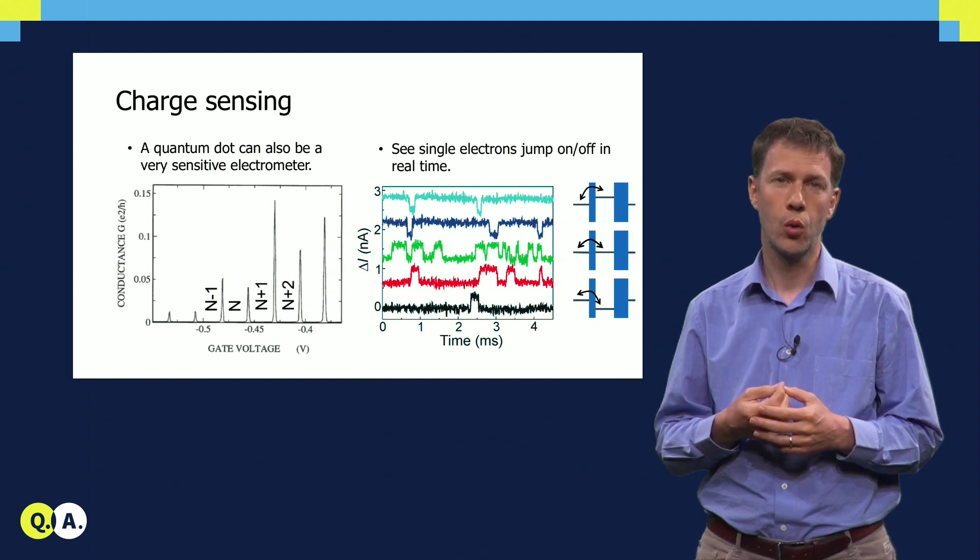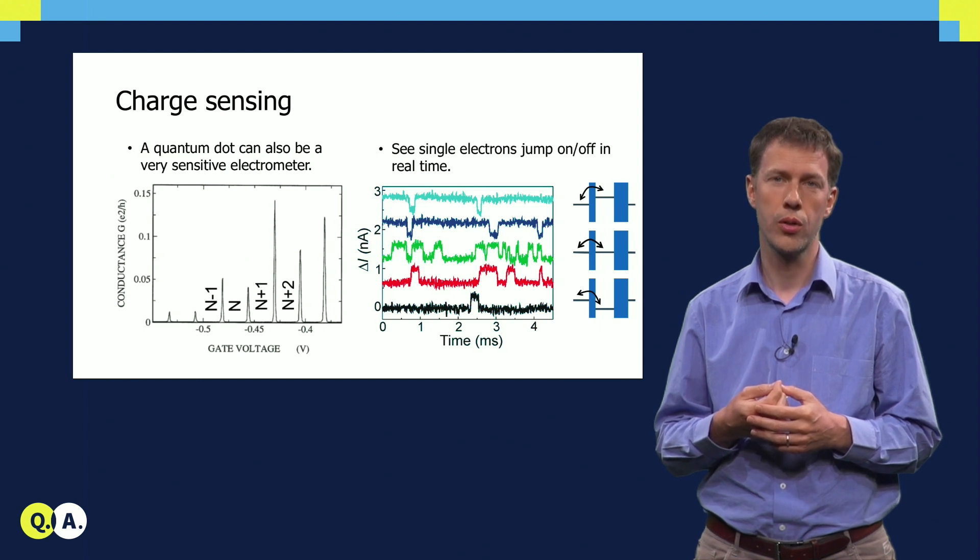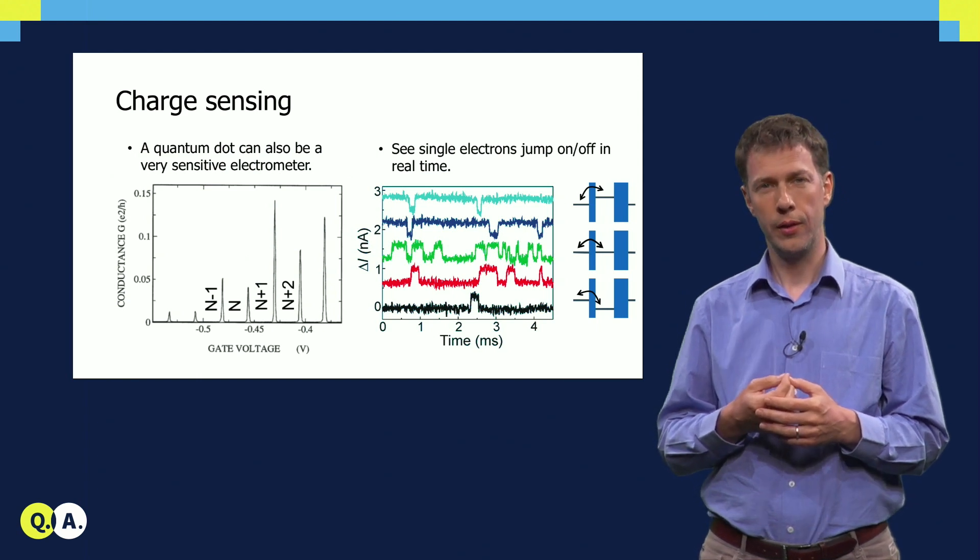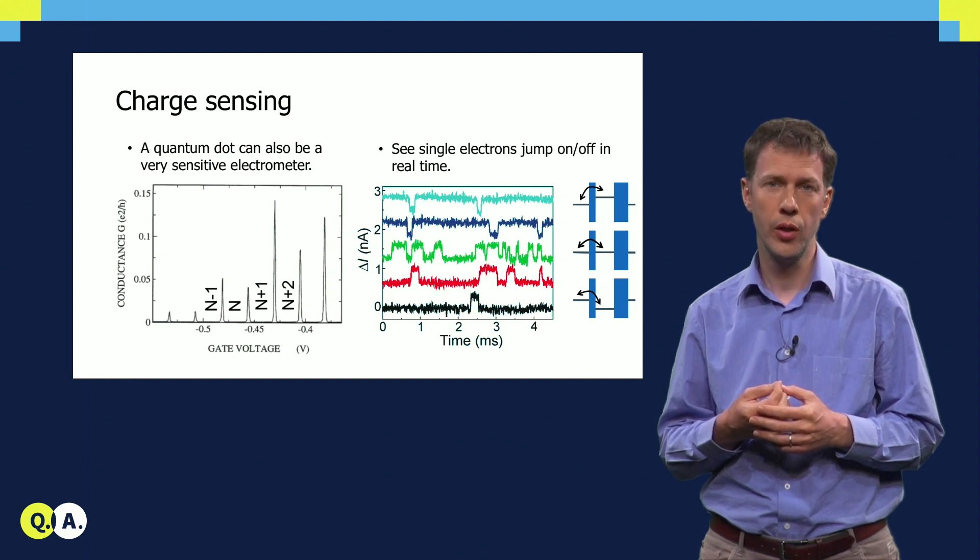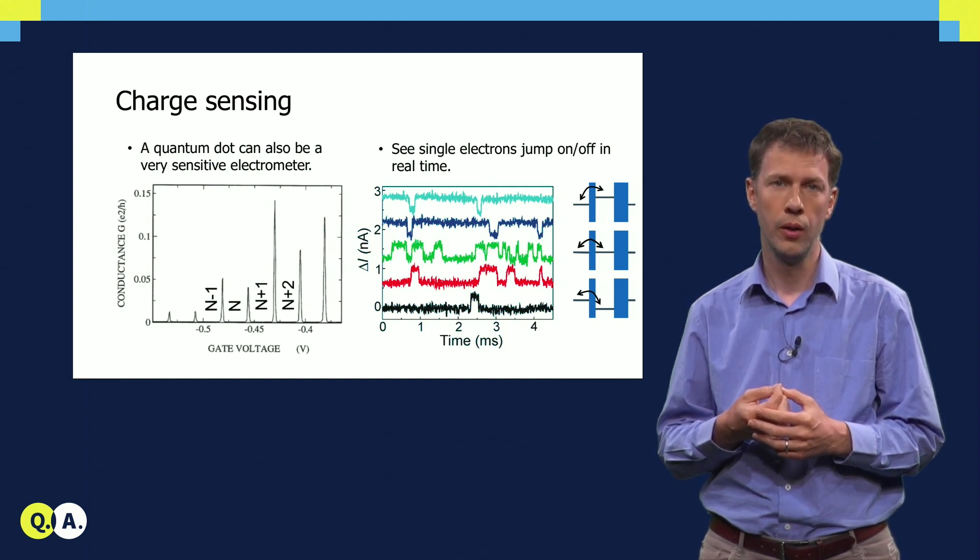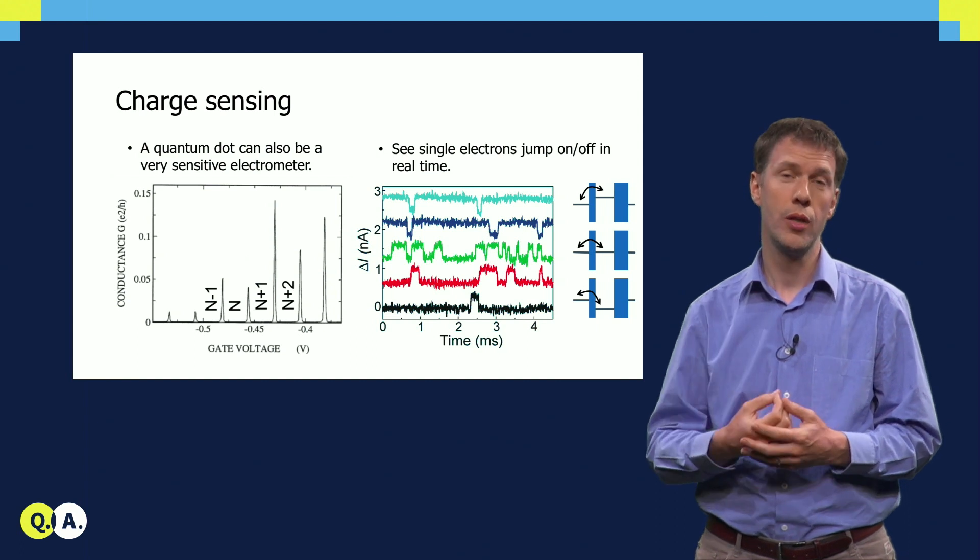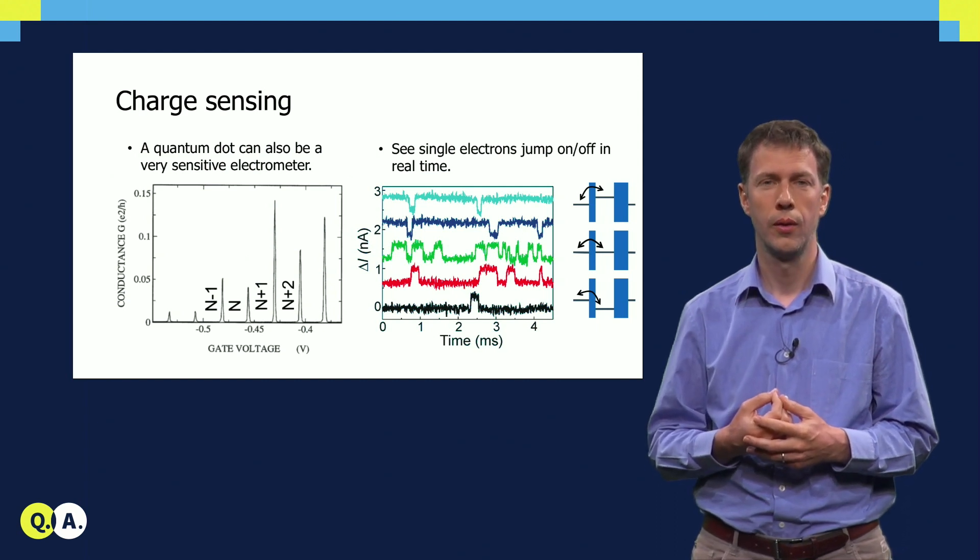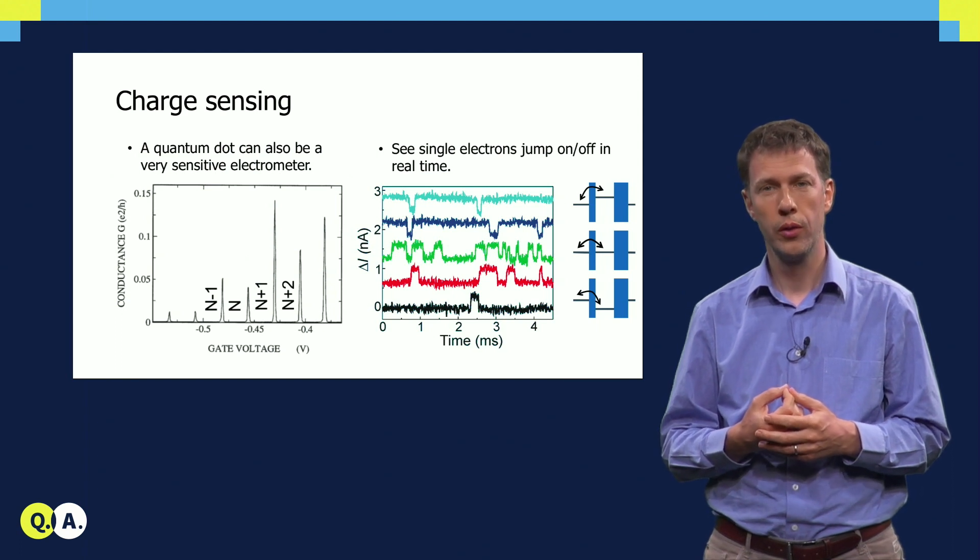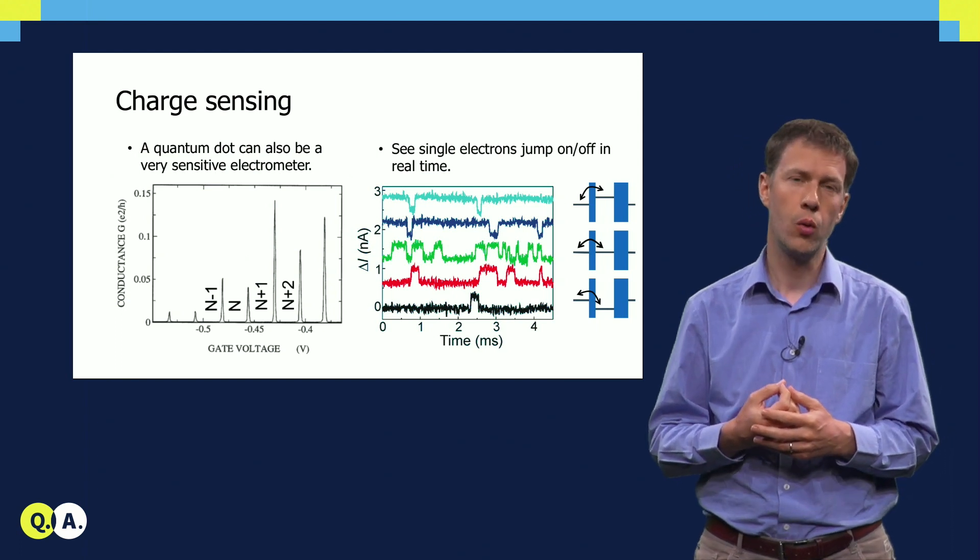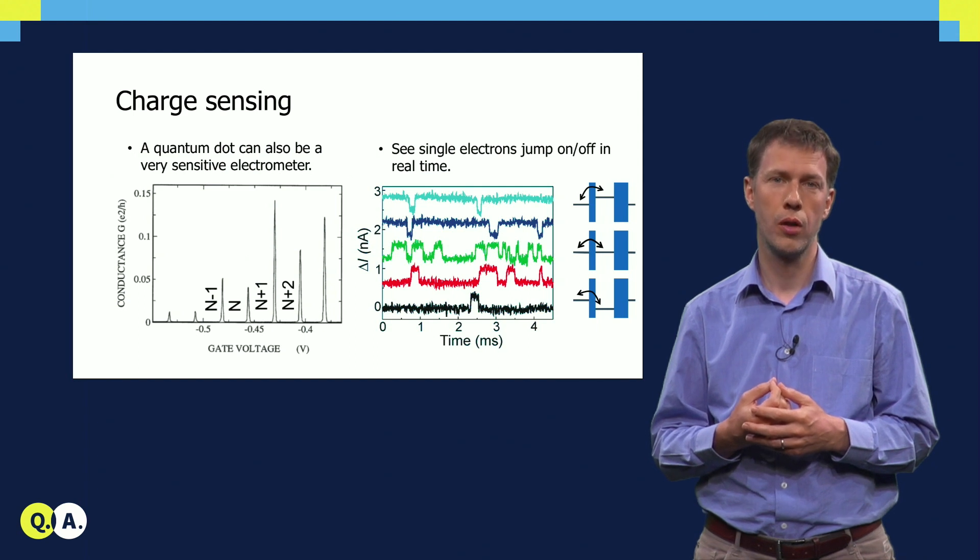Now imagine a second quantum dot is placed next to the first. It turns out that a single charge added to the second quantum dot acts like a small shifting gate voltage through capacitive coupling. It shifts the position of the levels in the first quantum dot. So when a single charge is added to one quantum dot, the current through a neighboring quantum dot is changed in a measurable way.